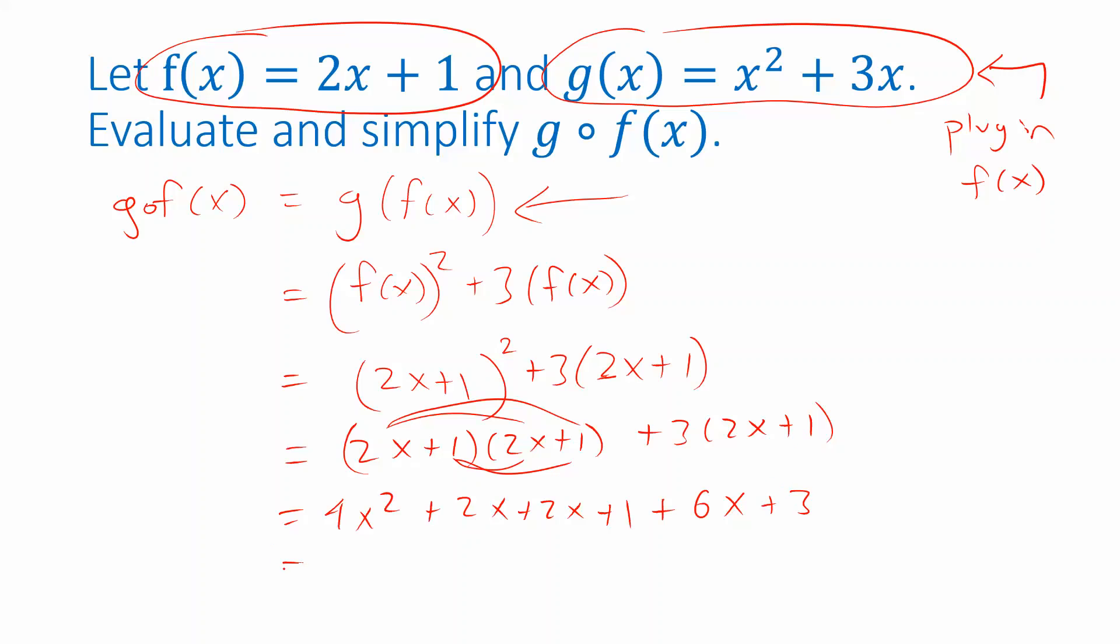And then if I combine like terms, I have 4x squared. 2x plus 2x plus 6x, that's 10x. And 1 plus 3 is 4. So g composition f of x is a function. And this is the formula for that function.